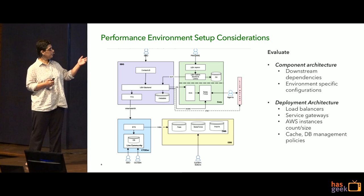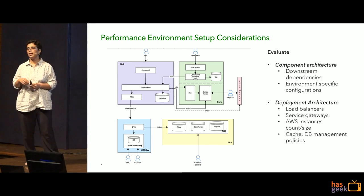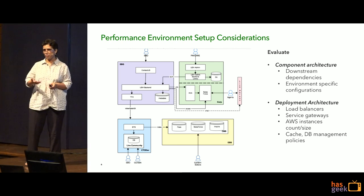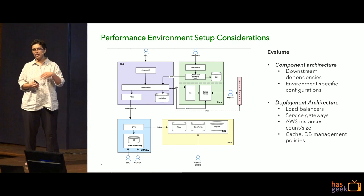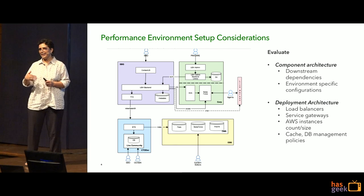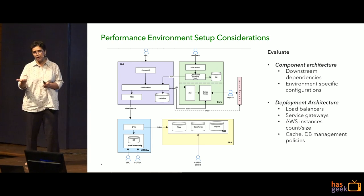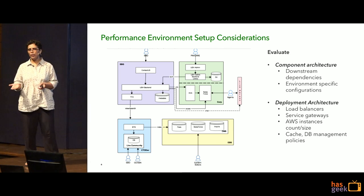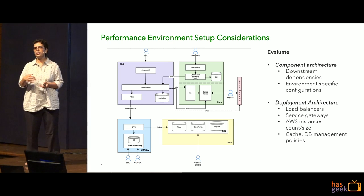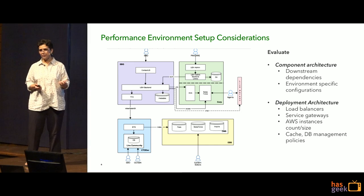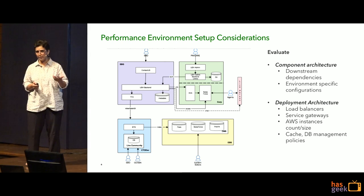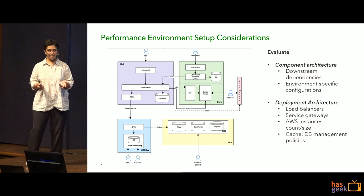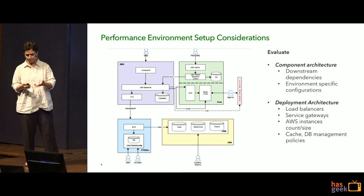Understanding your component architectures will also help you drill down on environment-specific configurations, because a common mistake when doing capacity planning exercises is overlooking a downstream environment that you have a dependency on. You may not be editing your application configurations to point to the downstream perf environments, and you may inadvertently end up pointing to a downstream production system or a beta cluster — creating a huge blast radius every time you run your test. So you want to carefully comb through your application configuration files to make sure you're not pointing to any downstream production or beta environment.